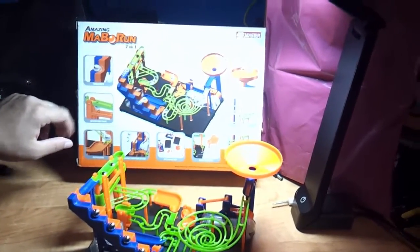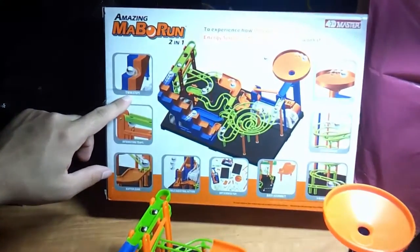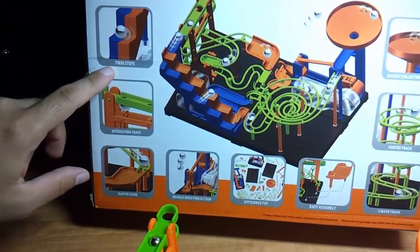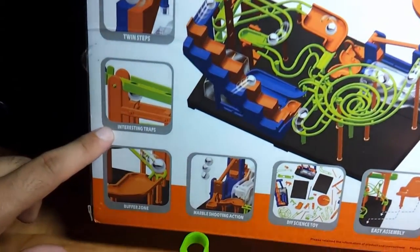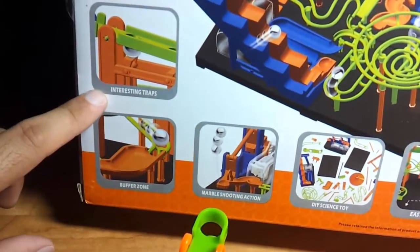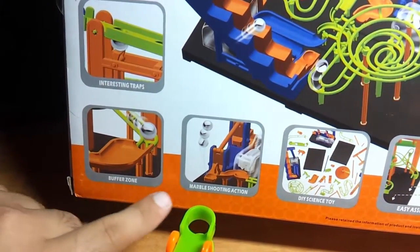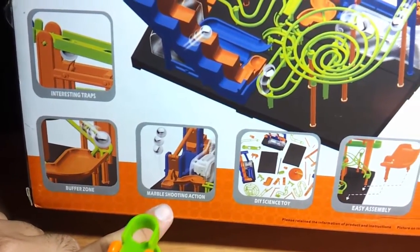Zooming in now to the box, you can see the main features: the twin steps. If we go down, we have interesting traps and a buffer zone.